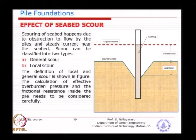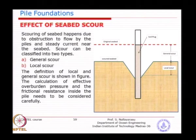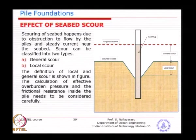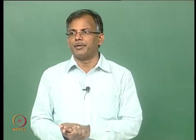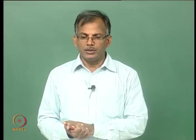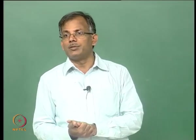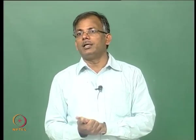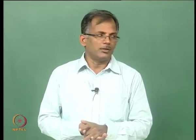Typically the local scour and the general scour depend on the site, the characteristics of the soil, and the flow around the structure. For example, if it is calm water, no scour can happen. Generally, scour is associated with the current in the near vicinity of the structure where you are constructing.